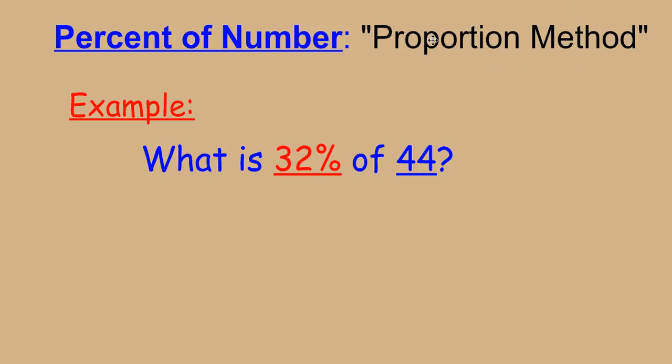Here we go. What is 32% of 44? The proportion method tells us that we need to set up two equivalent ratios because that's what a proportion is. Now, 32% actually means 32 per 100, so we write this as a ratio of part to whole.